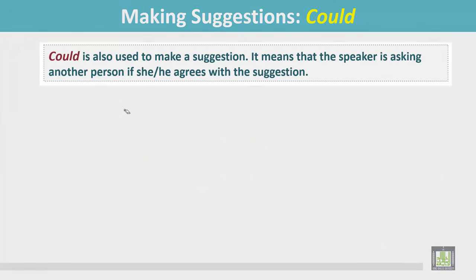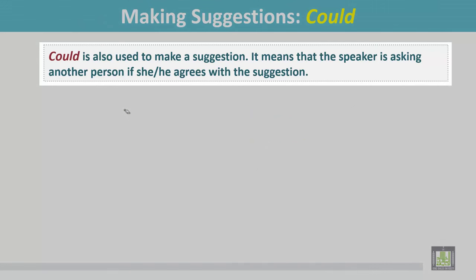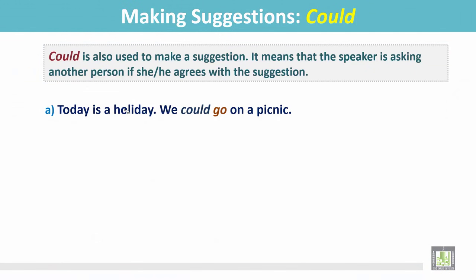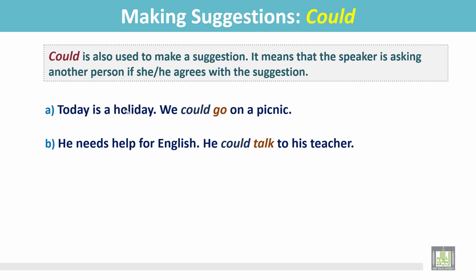'Could' is also used to make a suggestion. It means the speaker is asking another person if she or he agrees with the suggestion. For example: 'Today is a holiday. We could go on a picnic.' 'He needs help for English. He could talk to his teacher.' In both sentences the verbs are in the present simple form.